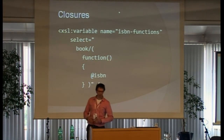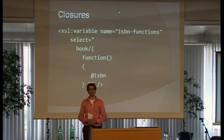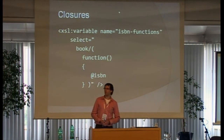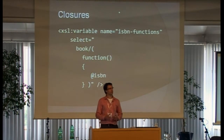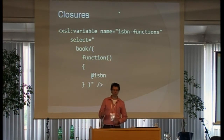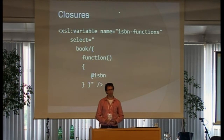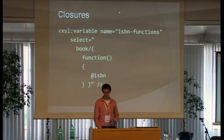Here is how I would want to write a function that, from a book, takes its ISBN number. But this is not allowed, unfortunately. Just as with XSL function, a function does not have a context. So what I'm doing here: I'm making an inline function and I want the ISBN attribute. But the processor will complain there is no context — I cannot get to the ISBN attribute. Even though at the moment you create the function, it's actually there. So there's nothing to complain about, but that's the way it is.